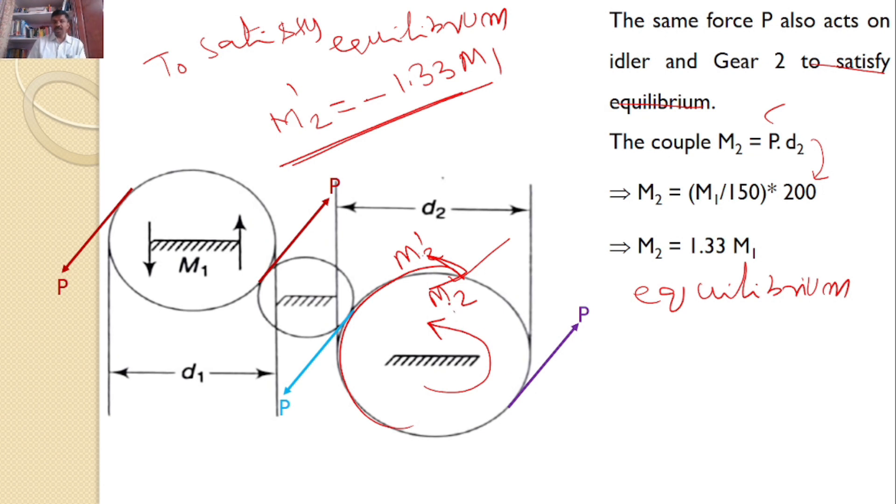These two moments are equal and opposite, satisfying the equilibrium condition. Therefore, the answer is M₂' = -1.33M₁.